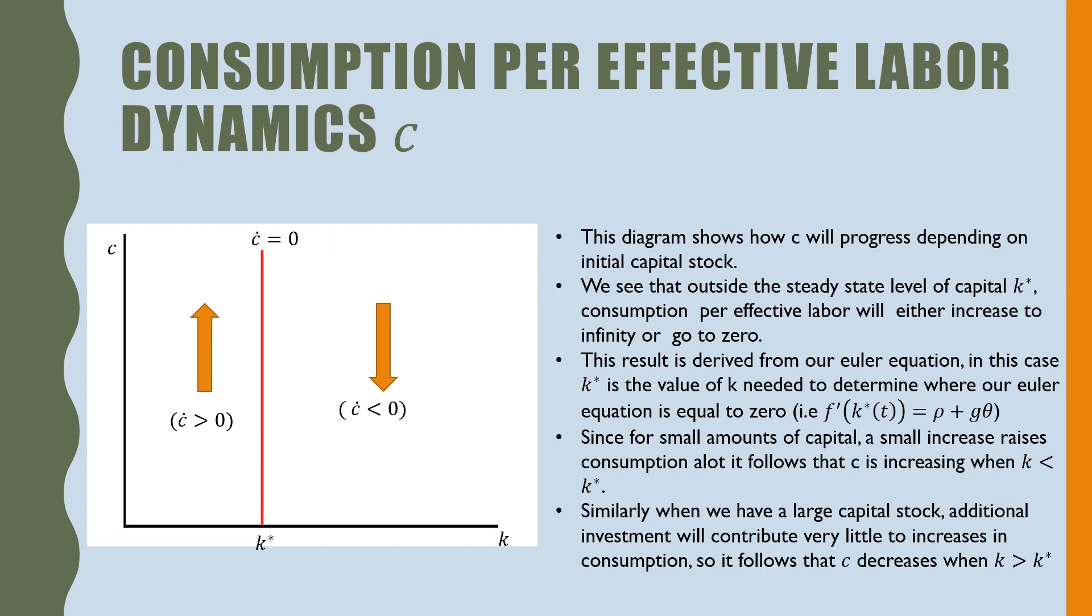In this case, k star is the value of k needed to determine where our Euler equation is equal to zero, where f prime of k, which is our marginal product of capital, is equal to rho plus g times theta.